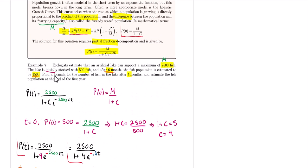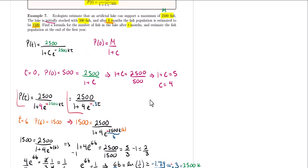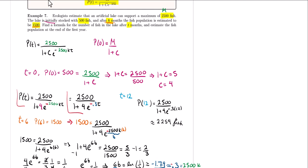Now we need to find the fish population at the end of the first year. After one year, t = 12, so we evaluate P(12) = 2,500 divided by 1 plus 4 times e to the negative 0.3 times 12, which gives approximately 2,254 fish.